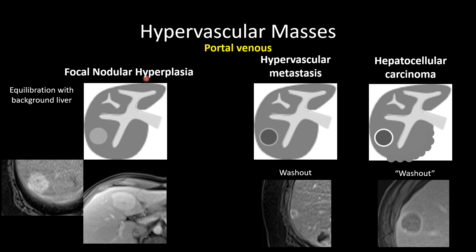On the portal venous phase, focal nodular hyperplasia slowly equilibrates with the background liver — as the liver enhances, FNH shows progressively less relative hyper-enhancement, eventually reaching similar enhancement intensity to liver. Hypervascular metastases, on the other hand, tend to wash out early, which is particularly evident on contrast-enhanced ultrasound. Hepatocellular carcinoma will often show washout, but later than hypervascular metastases; sometimes washout is not evident until the two to five minute delay.